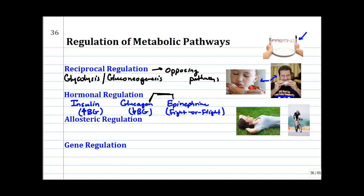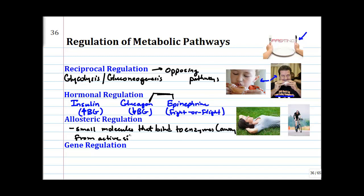Another type of regulation is allosteric regulation. In allosteric regulation of the metabolic pathways, you typically have small molecules that bind to enzymes away from the active site, but they influence the active site. The net result is you can increase or decrease enzyme activity.